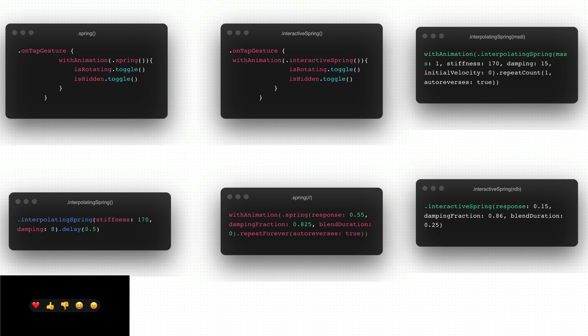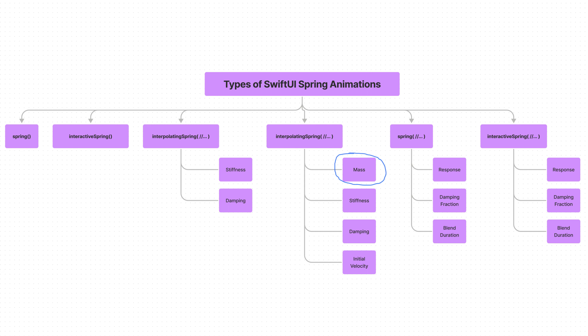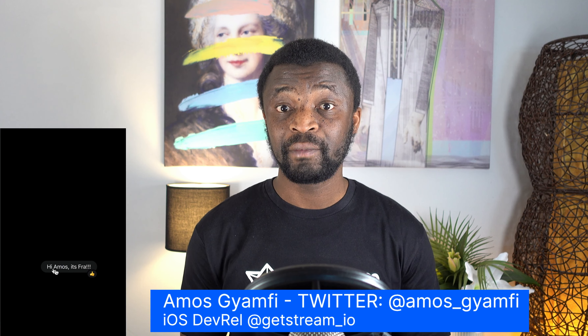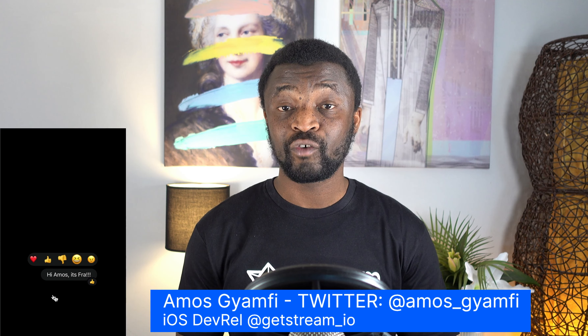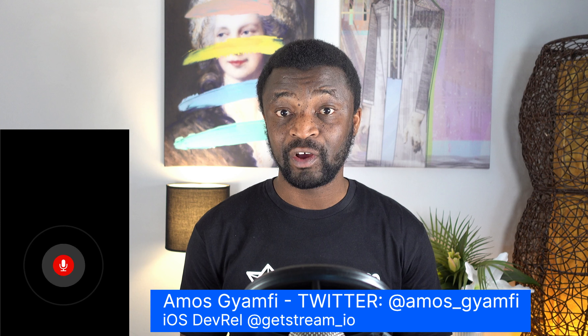After watching this video, you will understand the various kinds of spring animation parameters such as mass, damping, damping fraction, stiffness, initial velocity, and blend duration, and how to apply them confidently without guessing their values. Hi, my name is Amos from Stream iOS Developer Relations.